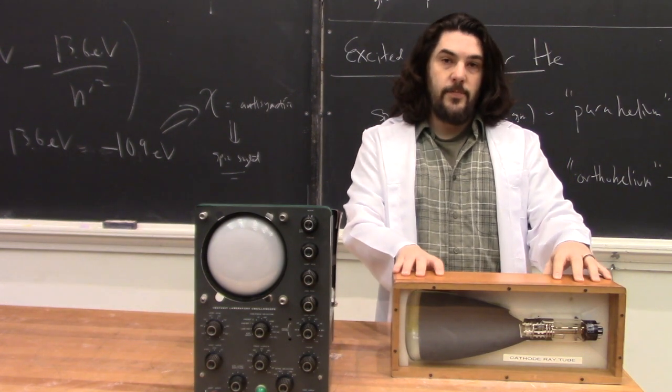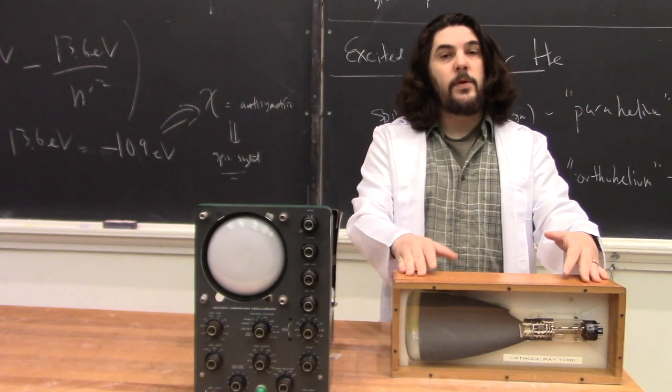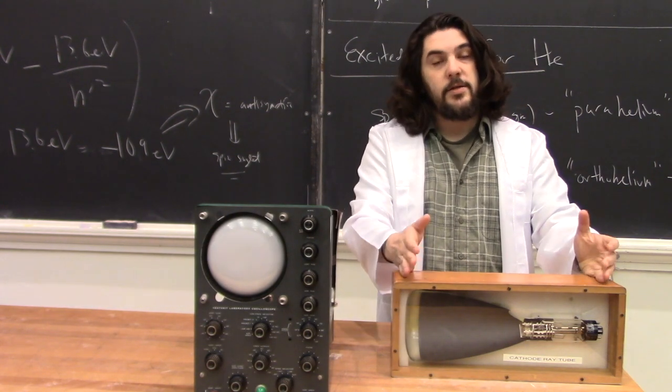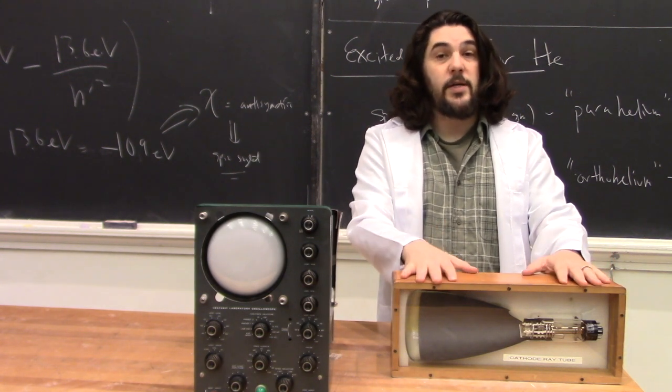This is a cathode ray tube, sometimes called a CRT or a brawn tube. It is what we used to use to show moving images, such as movies and anime, until the great plasma LCD war replaced CRTs with flat-screen LCD televisions.